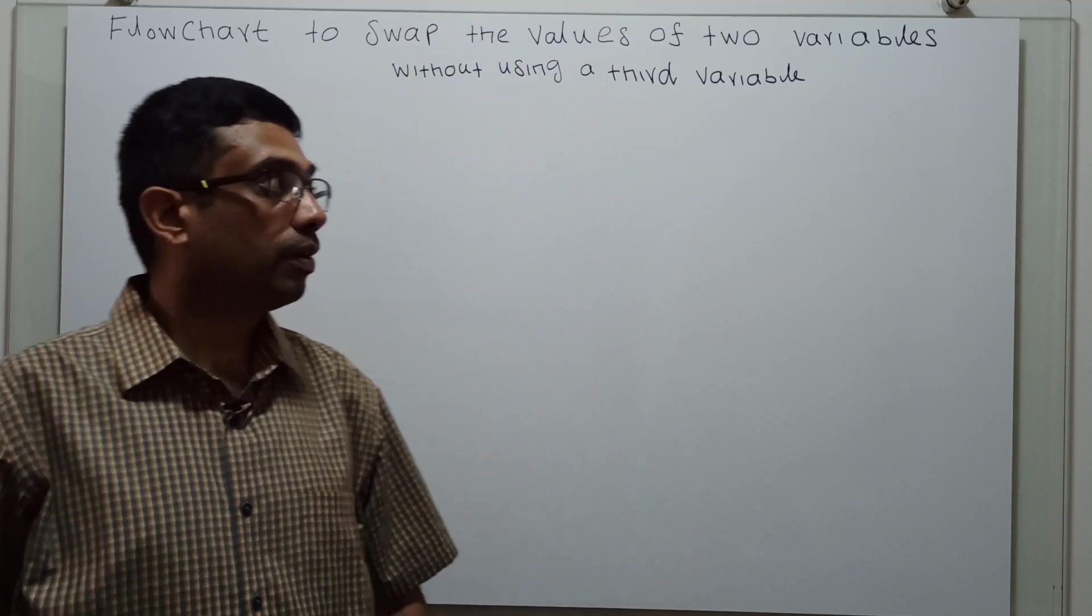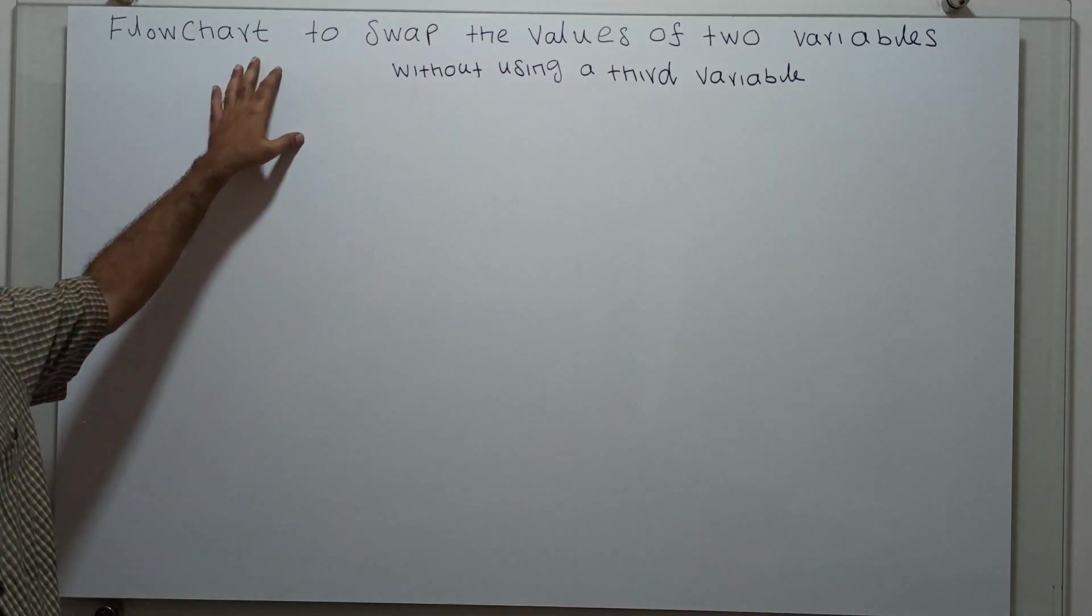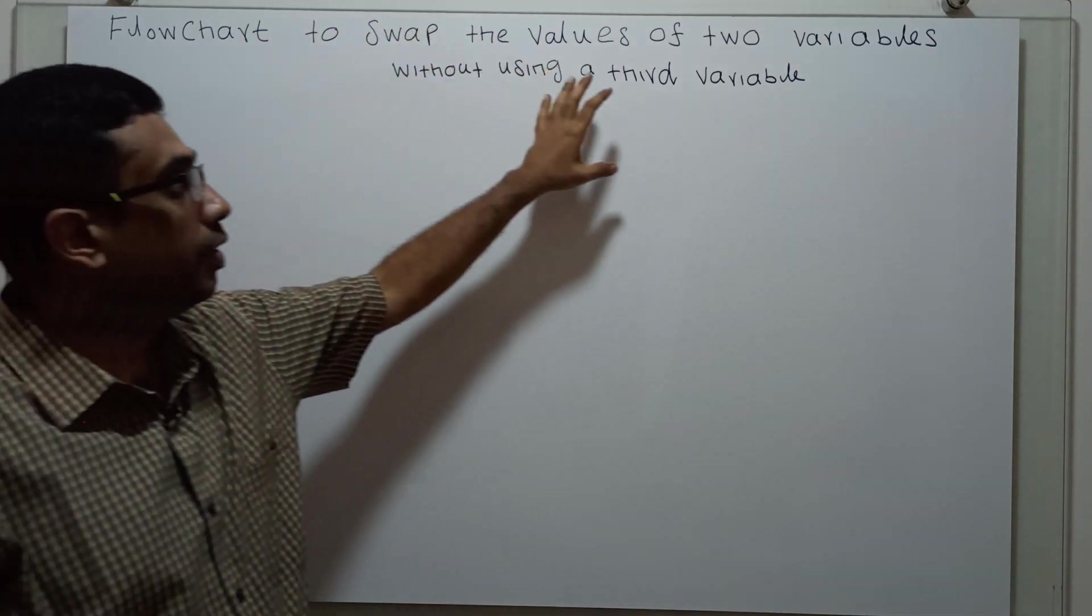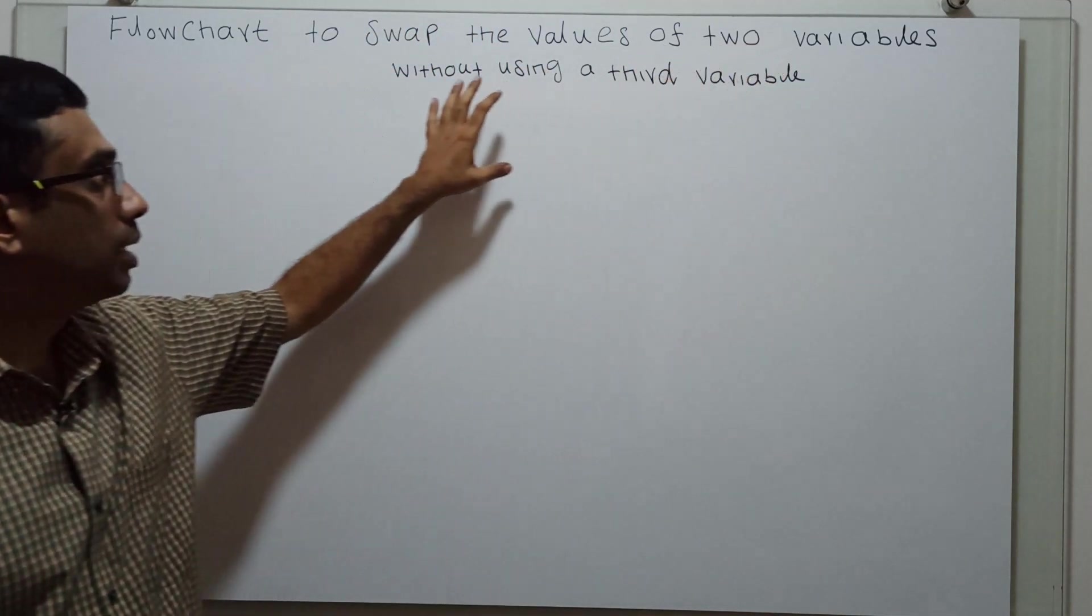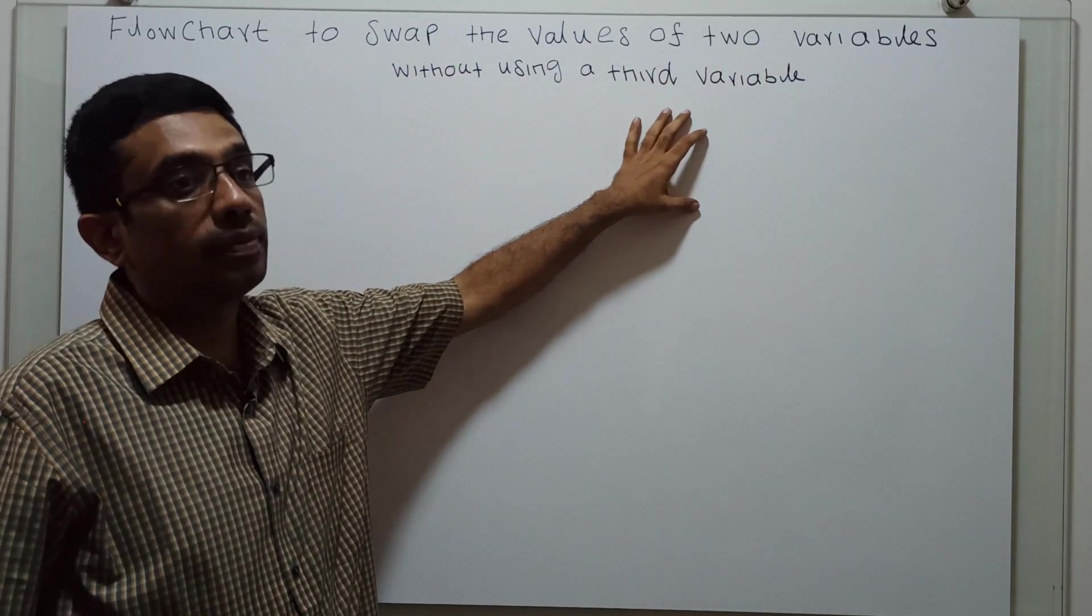Hello friends, we are going to derive a flowchart to swap the values of two variables without using a third variable.